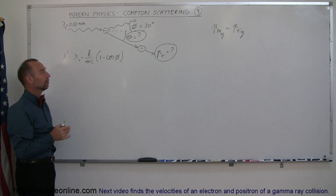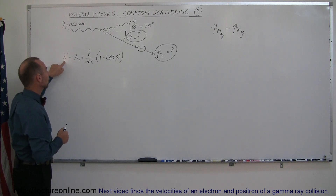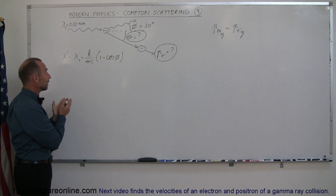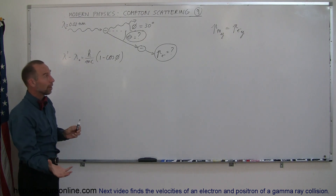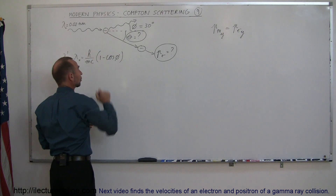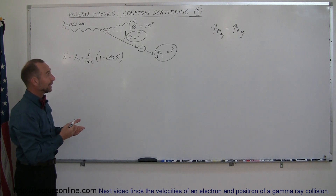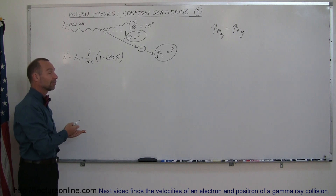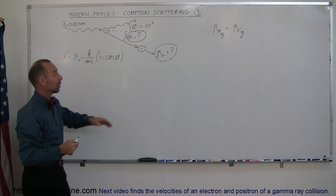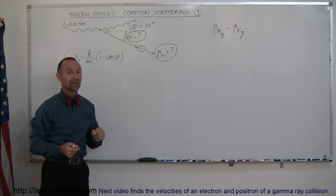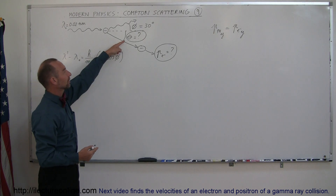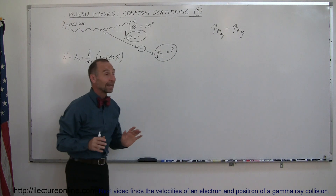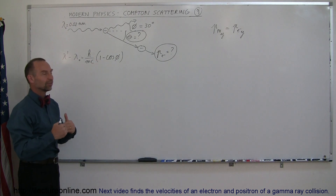So, strategy. First we're going to find the scattered angle of the photon. From that we'll calculate the change in energy, which is then imparted on the electron. That means we'll be able to find the kinetic energy of the electron, and from that we'll find the velocity of the electron. And if you know the velocity, we'll be able to find the momentum of the electron. And then finally we should be able to figure out the angle by using conservation of momentum. Seems like a lot of things to do here, but let's just take it one step at a time.